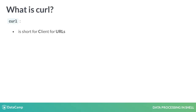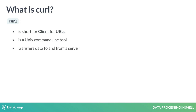Curl, short for Client for URLs, is a Unix command line tool for transferring data to and from a server. It is often used to download data from HTTP sites and FTP servers.